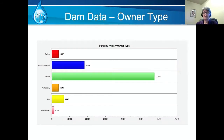Dam owner type also plays a role in risk. The majority of dams are owned either privately or by local municipalities. While it's not always the case, most of these dams do not provide an income stream for the owner, and therefore there is less money available for upkeep, maintenance, and improvements. In many cases of privately owned dams, there is one person who is the owner, the operator, the maintenance person, and the EAP coordinator.